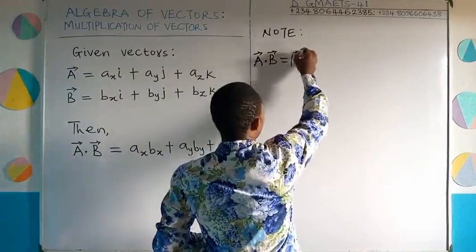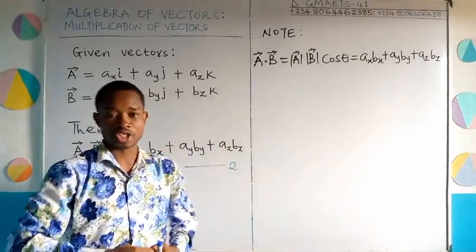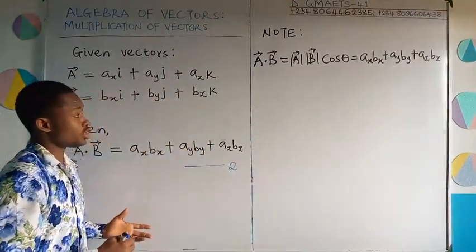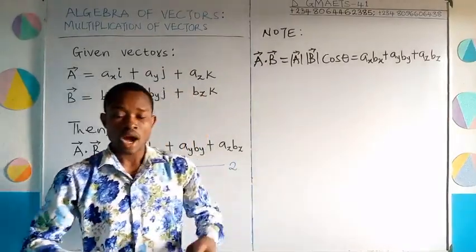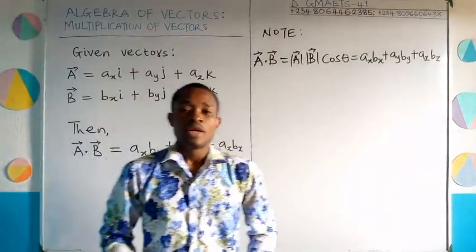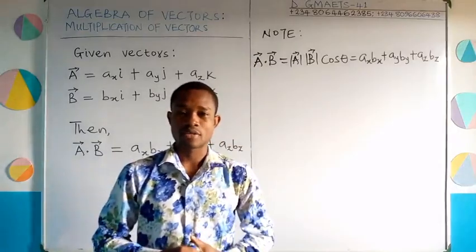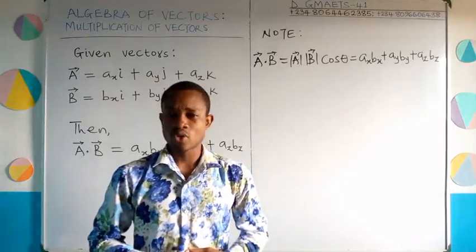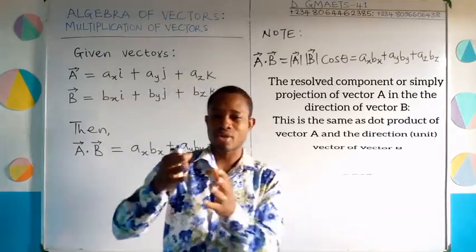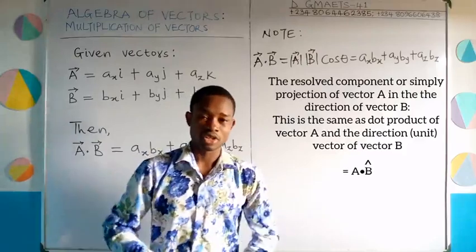Remember this general relationship between equation 1 and equation 2. We are going to solve problems using these formulas to appreciate them more. We know how to calculate the magnitude of a vector from our previous class. We shall pick questions and apply the knowledge of scalar products. We can also use scalar products to determine the orthogonal projection of a vector in the direction of another vector, which we will treat through calculation as we move on.